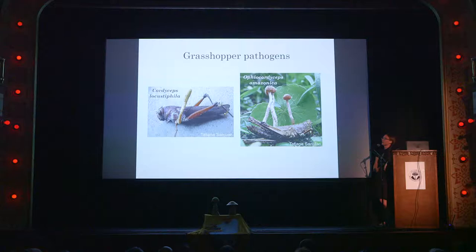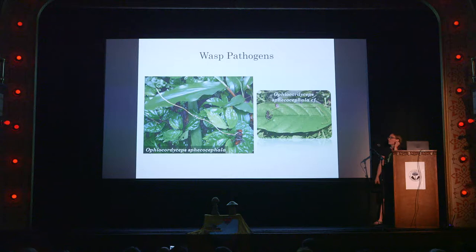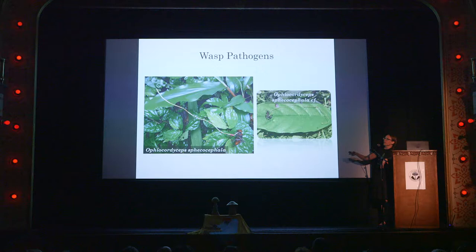There are a few grasshopper pathogens — both sexually reproducing, collected by a colleague in Colombia. One is still in Cordyceps as Cordyceps locustiphila, and Amazonica is in Ophiocordyceps. There are also a few wasp pathogens — sphacocephala or sphacocephala-like. This is a Japanese or Asian hornet, easily an inch and a half to an inch and three quarters in length. The fruiting structure coming directly out of the neck is probably at least five or six inches in height, with perithecia produced on the longish area at the tip.